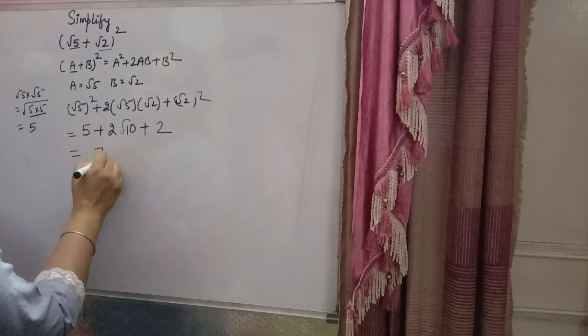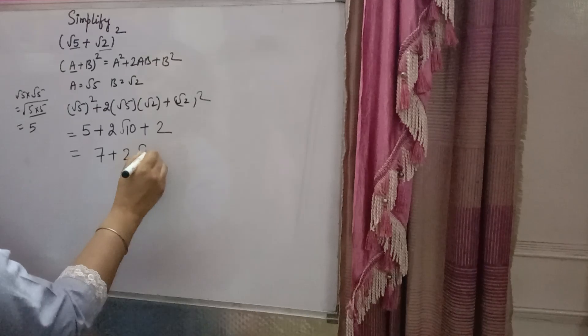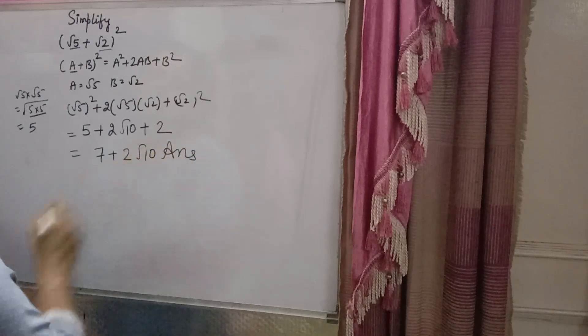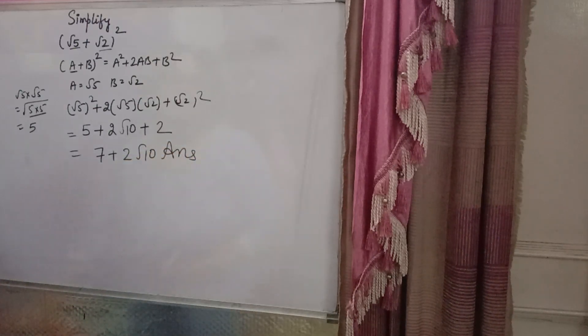Now 5 plus 2 equals 7, plus 2√10. This is the final answer: 7 + 2√10.